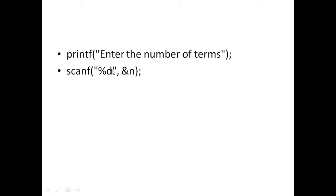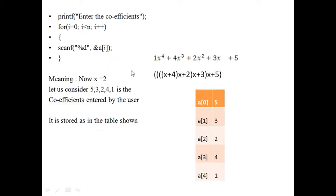Enter the number of terms — that is, the number of coefficients we need to enter. In our example, we will enter 5. Now enter the coefficients. The 5 is the number of coefficients and these are the coefficients: 5, 3, 2, 4, 1. These coefficients represent the polynomial: 1x⁴ + 4x³ + 2x² + 3x + 5, written in Horner's form as: x + 4 into x + 2 into x + 3 into x + 5.